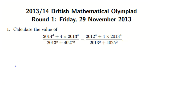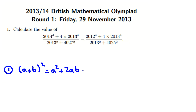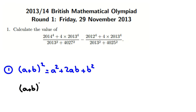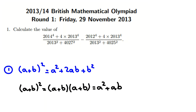The first identity we want to know is one of the most basic: (A + B)² = A² + 2AB + B². The proof: (A + B)² = (A + B)(A + B). A times A is A², A times B is AB, B times A is AB, and B times B is B². So it will be A² + AB + AB + B² = A² + 2AB + B².